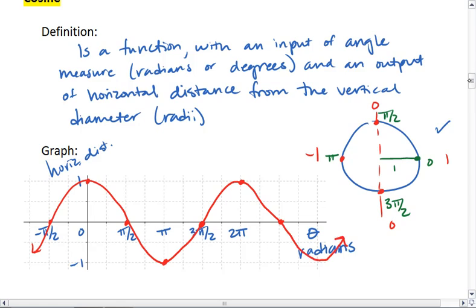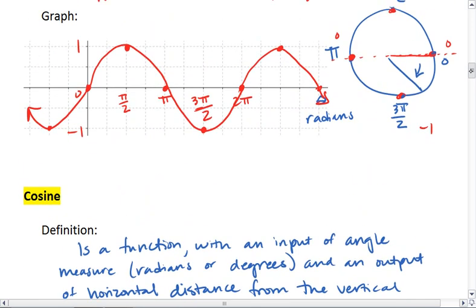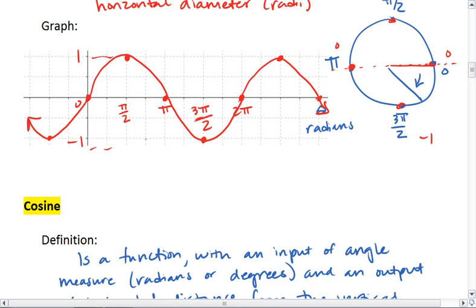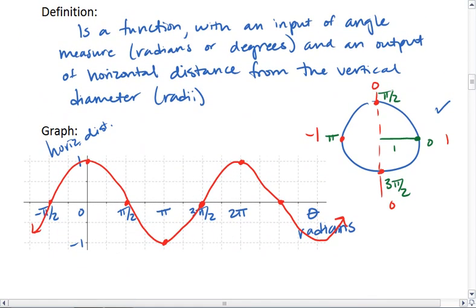So notice, cosine and sine look very different. They both have max and mins of positive 1, negative 1.